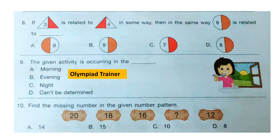Question 9: The given activity is occurring in the dash. Look at the picture. The correct answer is option A: morning.